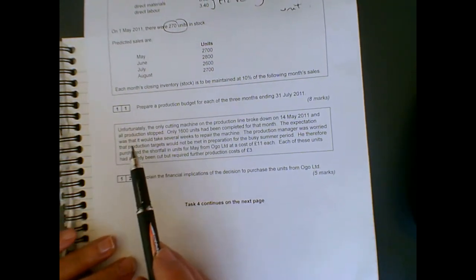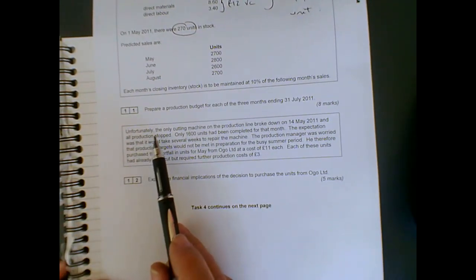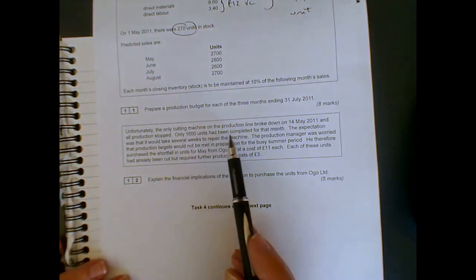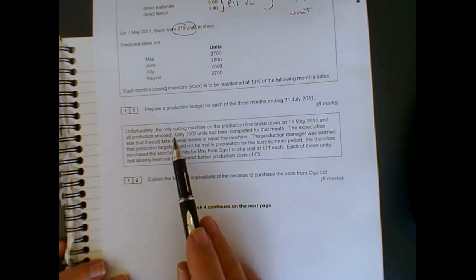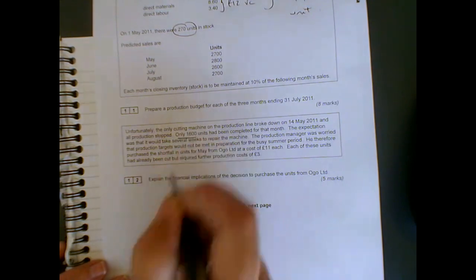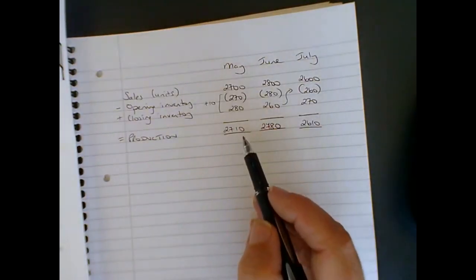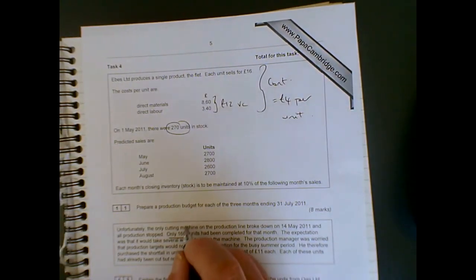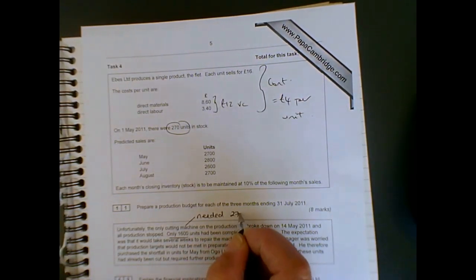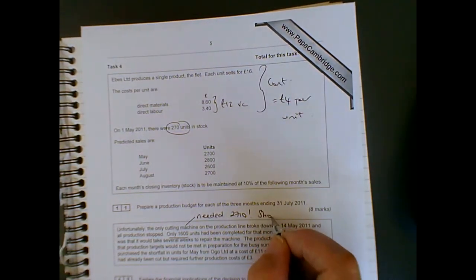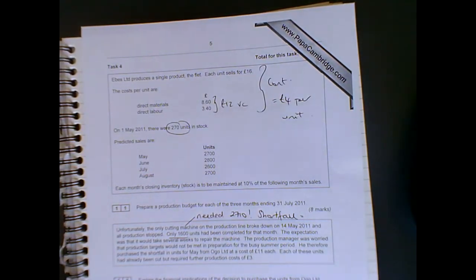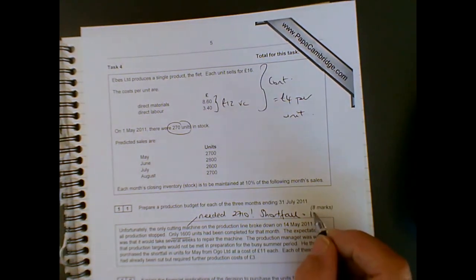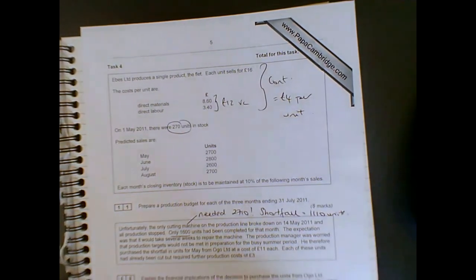If we look at the second part, they give us some more information. Unfortunately, the only cutting machine on the production line broke down on the 14th of May 2011, and all production stopped. Only 1,600 units had been made. This is in May. If we look at the production budget here, what we needed was 2,710. So our shortfall is 2,710 minus the 1,600 we've made, which is 1,110 units. That's the shortfall.